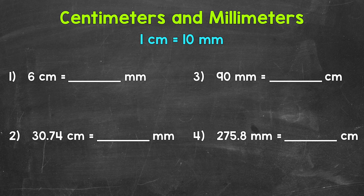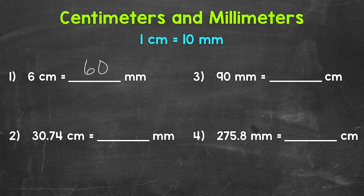Let's jump into number 1, where we have 6 centimeters equals how many millimeters? Each of those centimeters is going to be 10 millimeters. So we have 10 millimeters 6 times — in other words, 6 times 10. 6 times 10 equals 60. So 6 centimeters equals 60 millimeters. When we go from centimeters to millimeters, we multiply by 10.